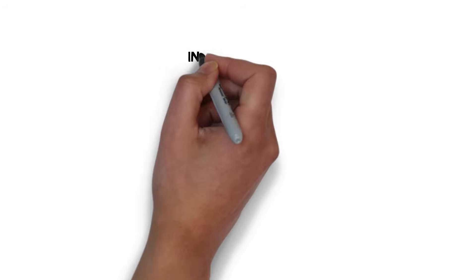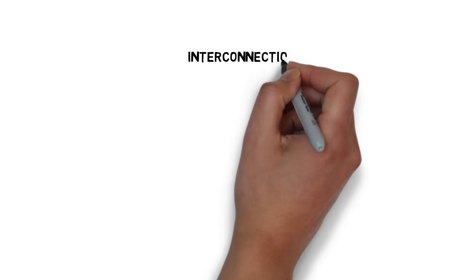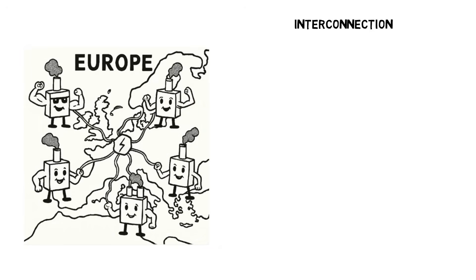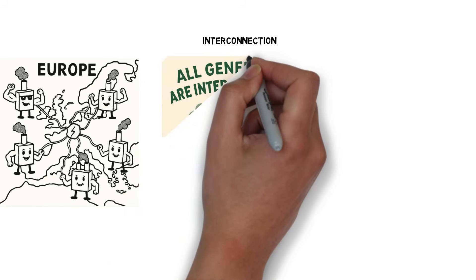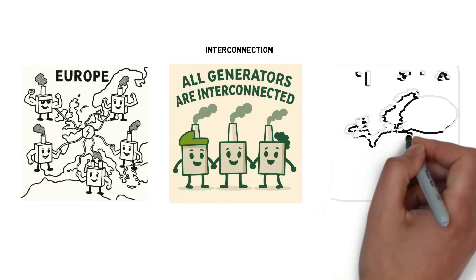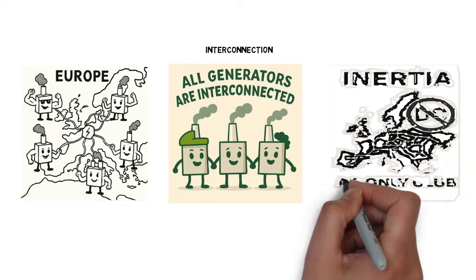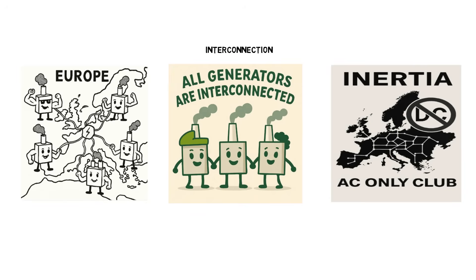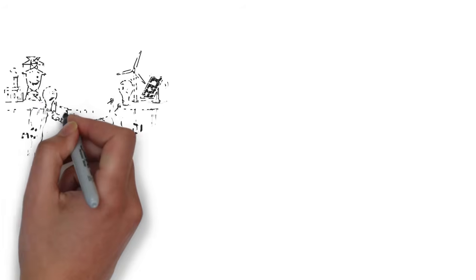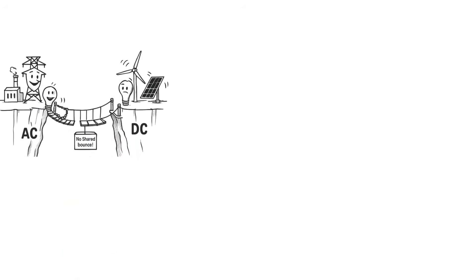Europe's power grid is a vast web of interconnections. Some countries are tightly woven into it, others less so. These links can be used to tap into the inertia of neighboring grids, borrowing stability when needed. But there's a catch. The benefit depends on the size of the interconnectors, and whether they're AC or DC. If the connection is DC, it's electrically decoupled. That means no shared inertia, no stabilizing force.